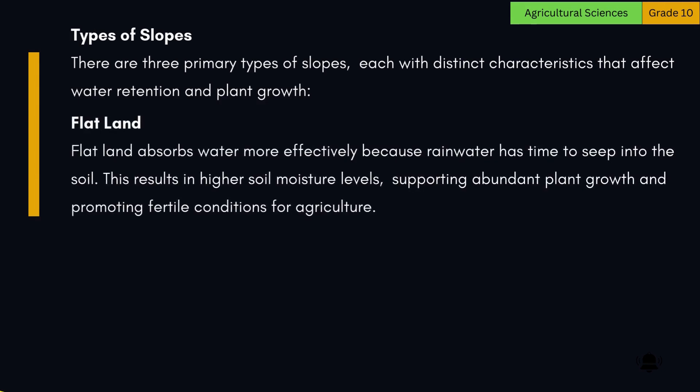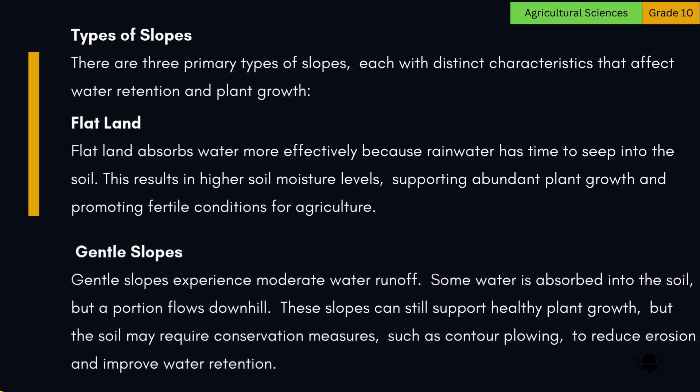There are three primary types of slopes. Flatland absorbs water more effectively because rainwater has time to seep into the soil, resulting in higher soil moisture levels, supporting abundant plant growth and promoting fertile conditions for agriculture. Gentle slopes experience moderate water runoff — some water is absorbed into the soil but a portion flows downhill. These slopes can still support healthy plant growth, but the soil may require conservation measures such as contour plowing to reduce erosion and improve water retention.